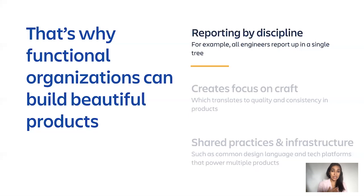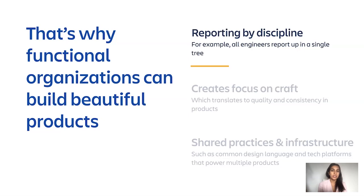Now, before we get into how to do this well, it's important to understand how your organizational setup can have an impact on this. At a high level, there are two kinds of organizations. One is divisional, where people in different functions — say product, engineering, marketing — report to a single business leader. These organizations tend to be faster, they make quick decisions. However, they can also become siloed and result in lower product quality as each individual team optimizes for their own goals.